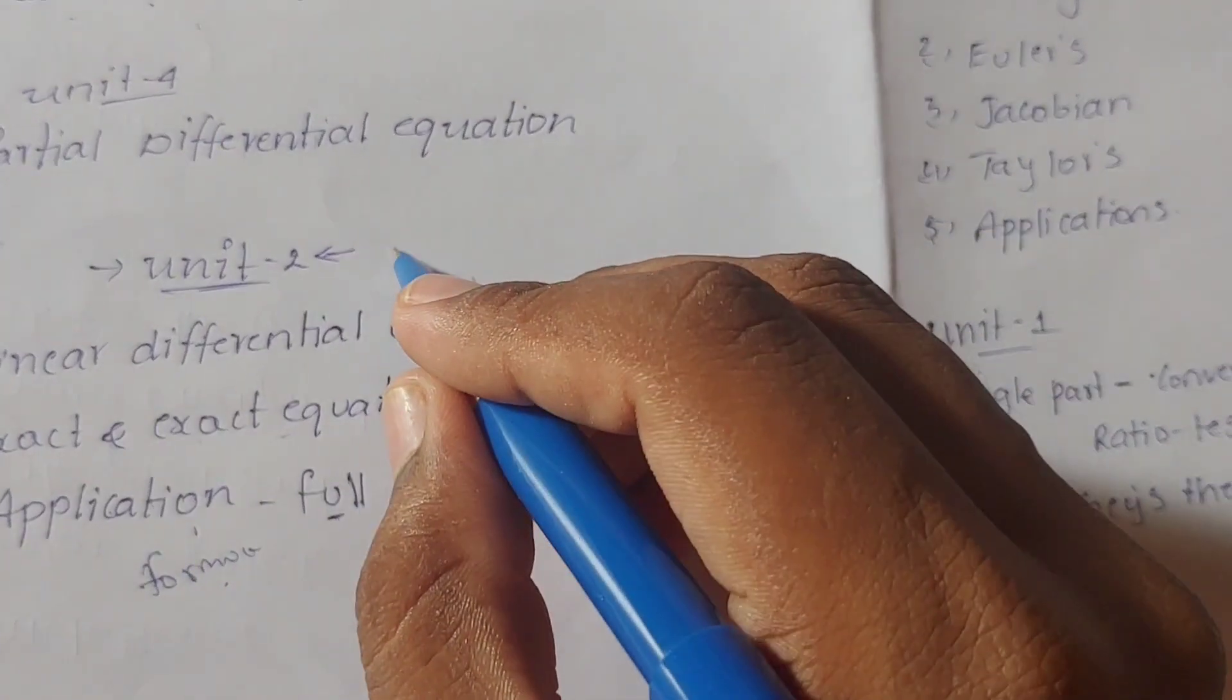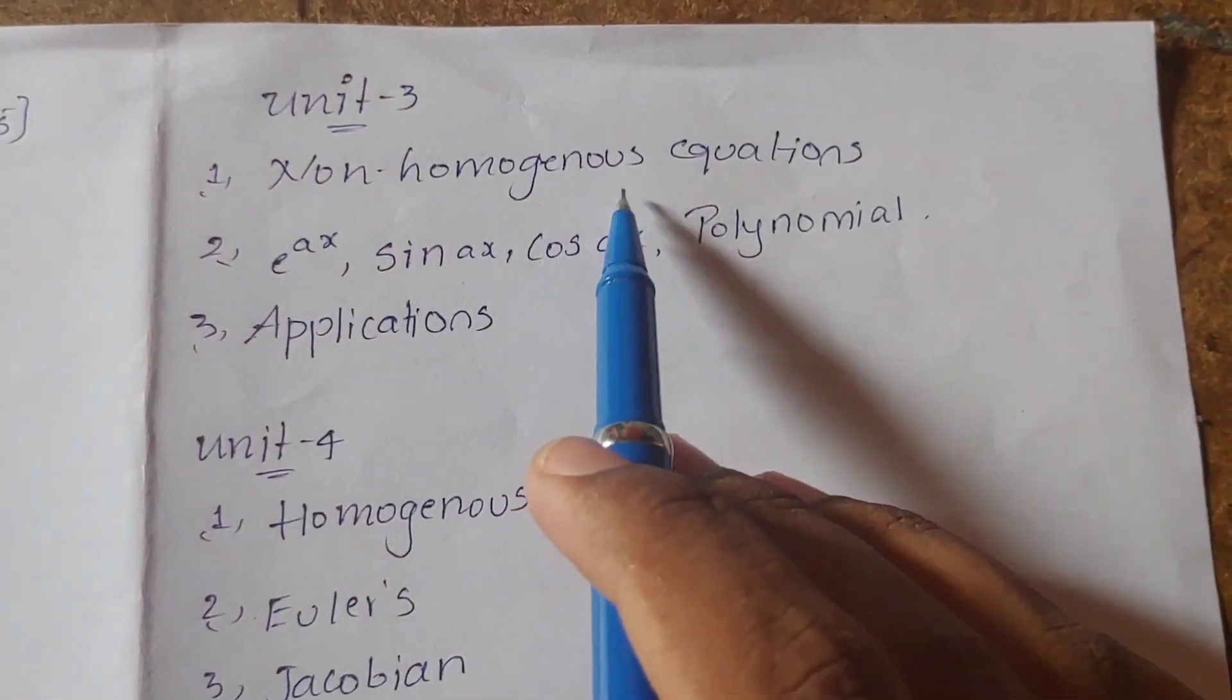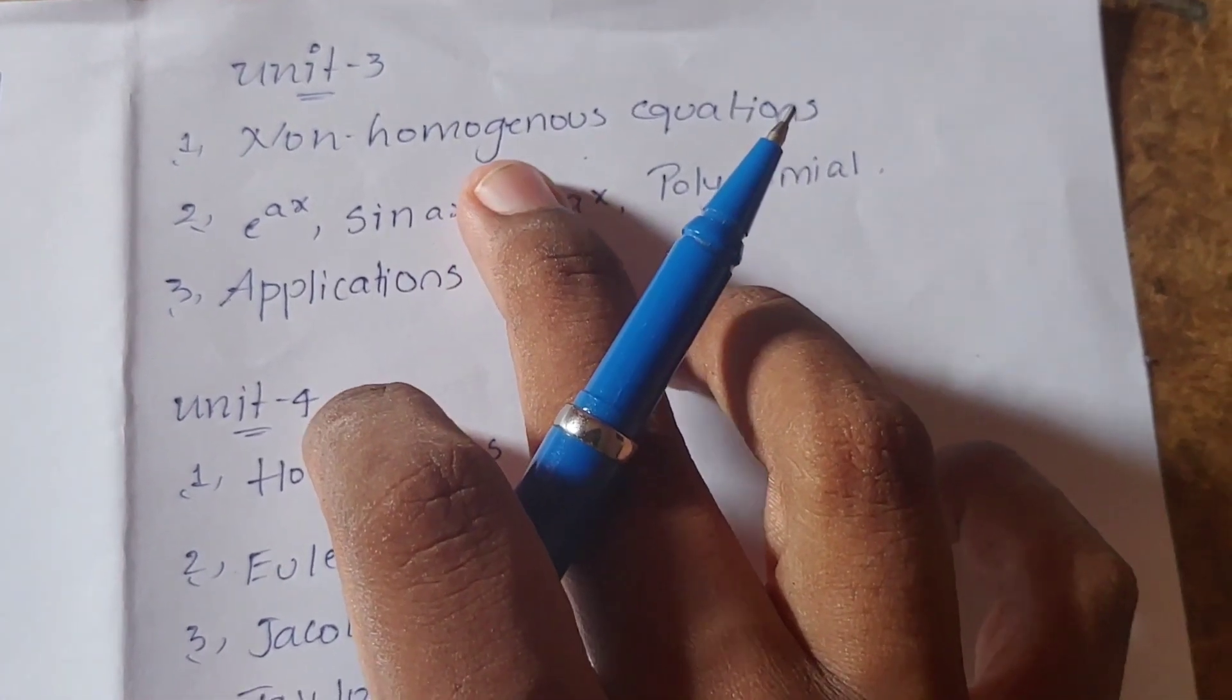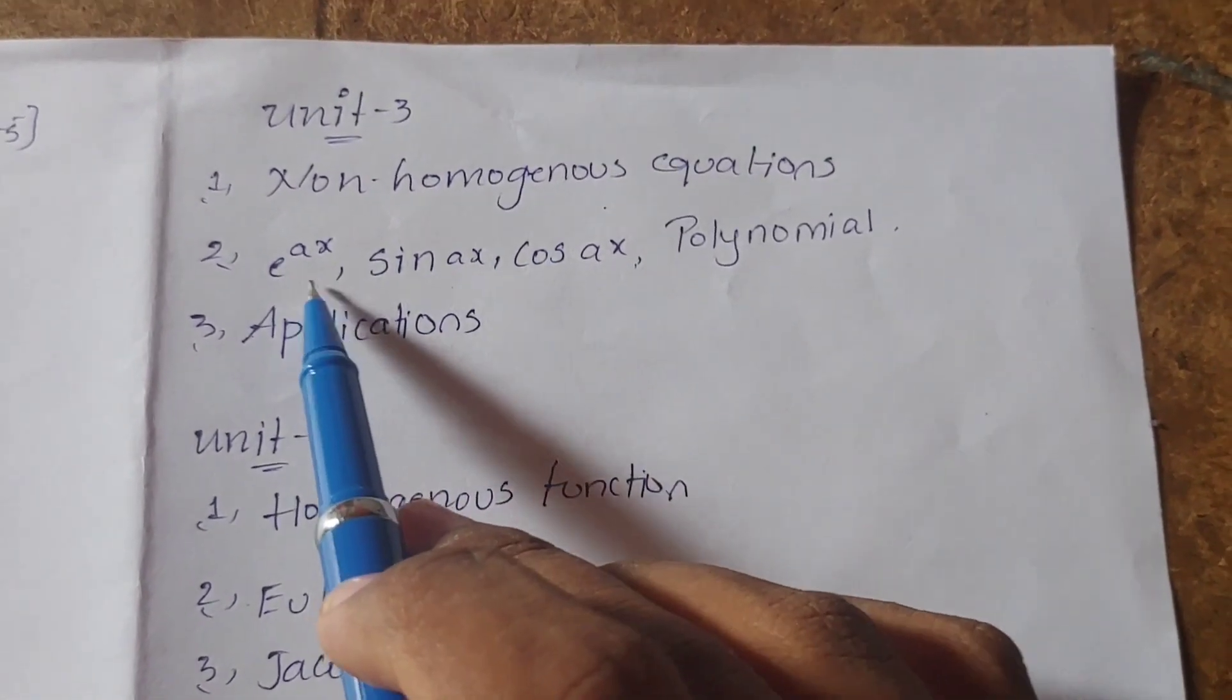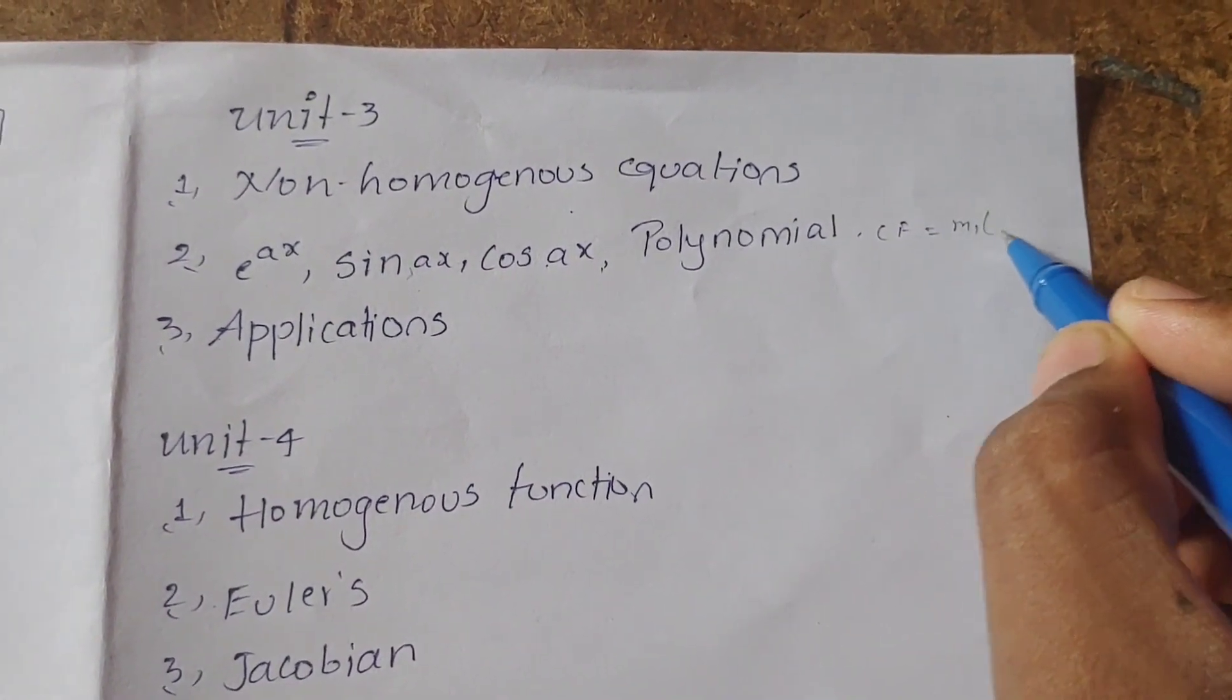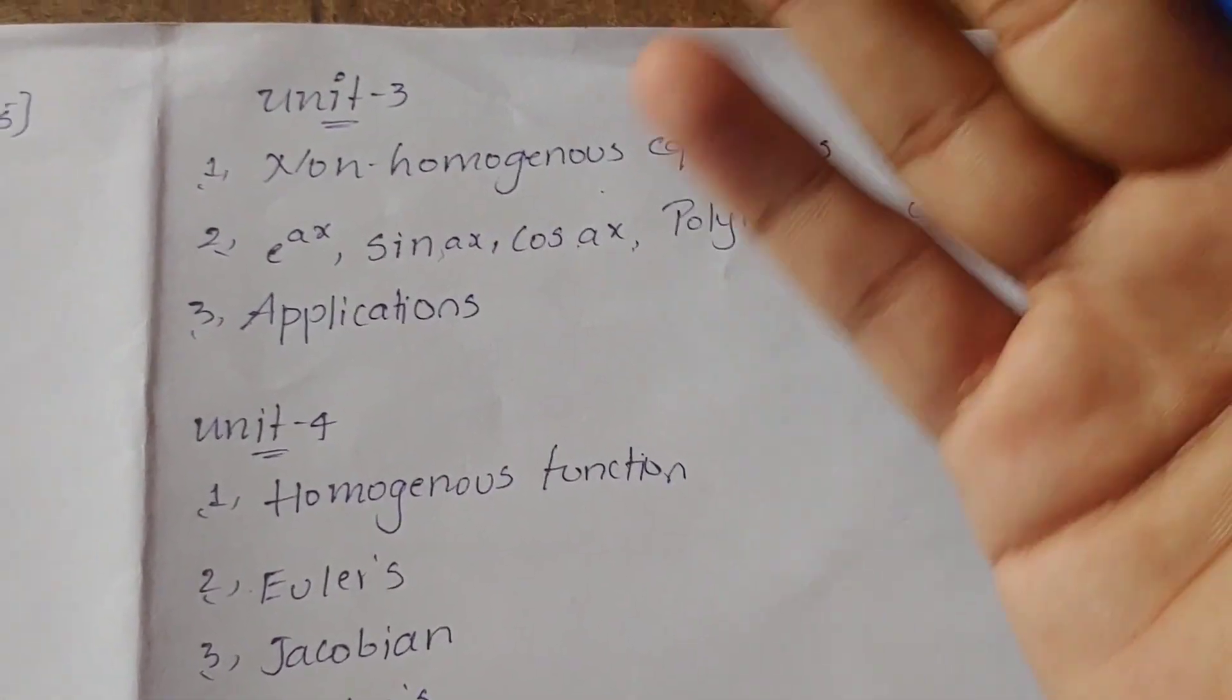Unit 3 is simple and easy. Coming to Unit 3, non-homogeneous equations. Non-homogeneous equations are correct and simple. The logic is that Unit 3's first topic is easy. Non-homogeneous equations for different functions, calculate the complementary function and particular integral. Three types of equations.